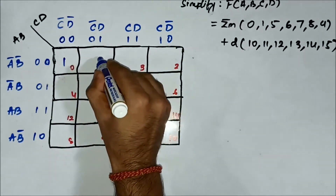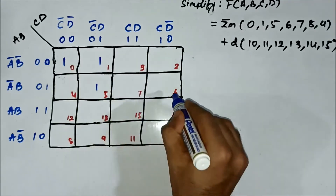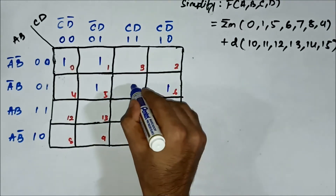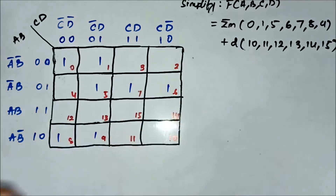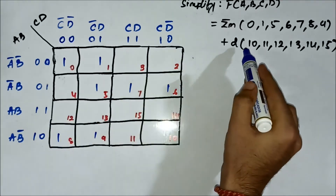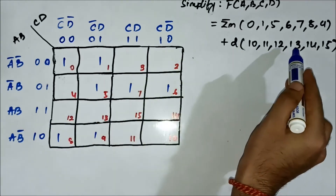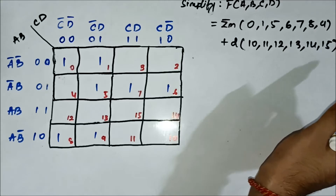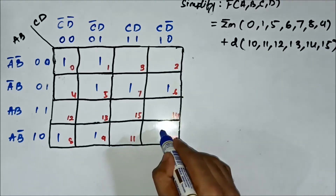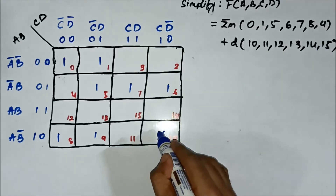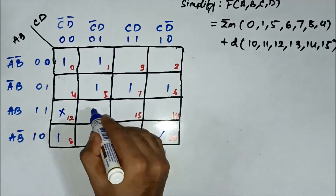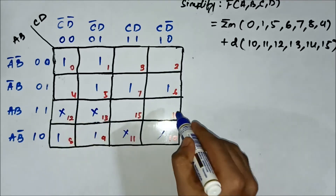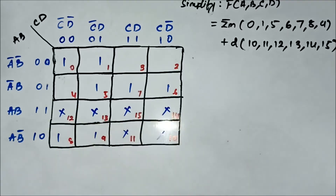So marking the min-term values: 0, 1, 5, 6, 7, 8, 9 are marked as 1. Then the don't care values — 10, 11, 12, 13, 14, 15 — will be marked as X.